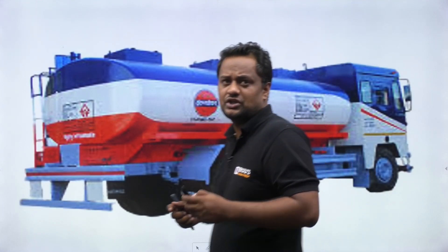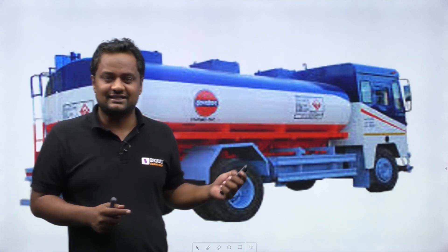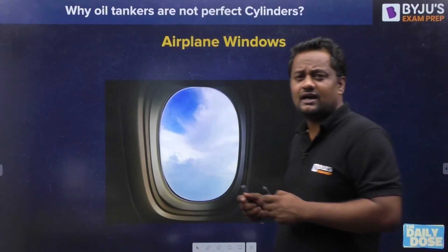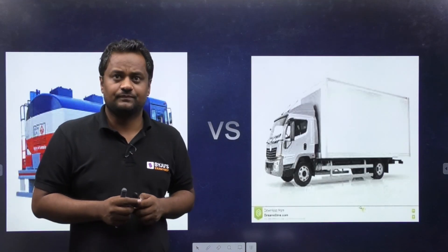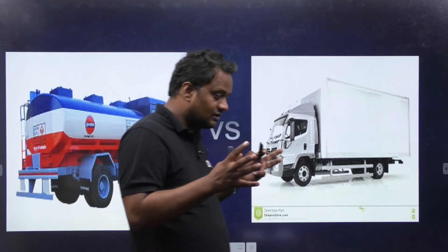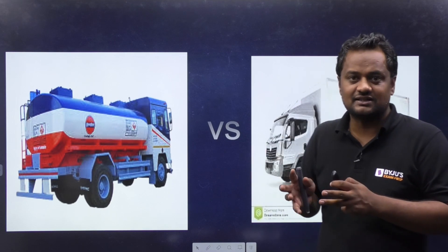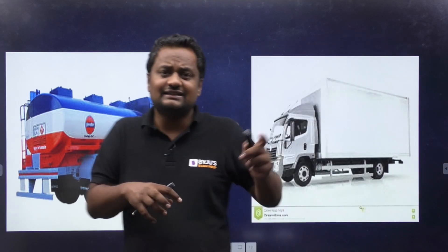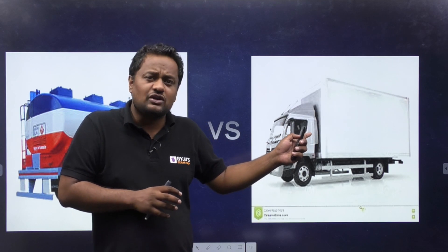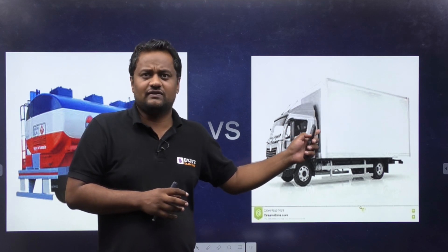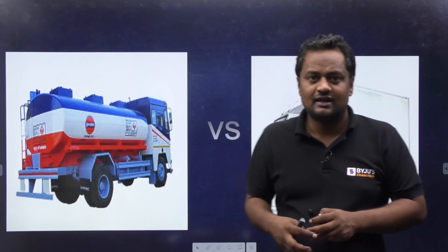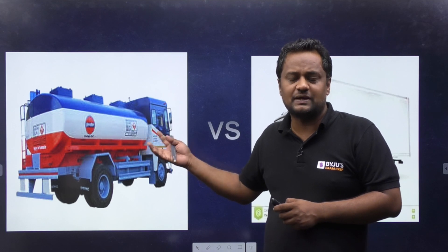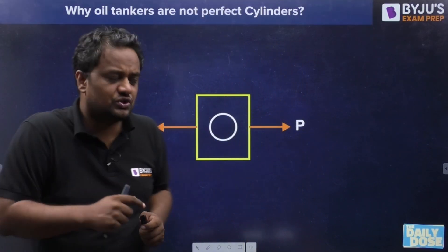You've seen these tankers — they are curved in shape. Not only tankers, but aeroplane windows are also not rectangular; they are oval shaped. If I leave oil tankers and look at normal cargo trucks, they are not cylindrical — they are perfectly rectangular. So why is the cargo truck rectangular while the oil tanker is curved? Let me ask you a question before telling you the answer.